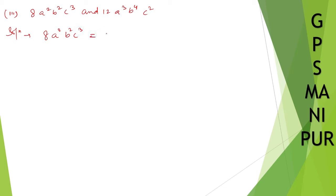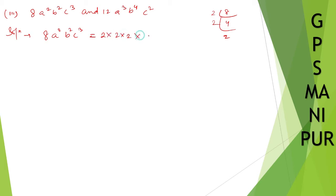I can write down 8a²b²c³ by breaking down into small factors. The factors of 8: 2 into 2 into 2. Then a² is a into a, b² is b into b, and c³ is c into c into c.